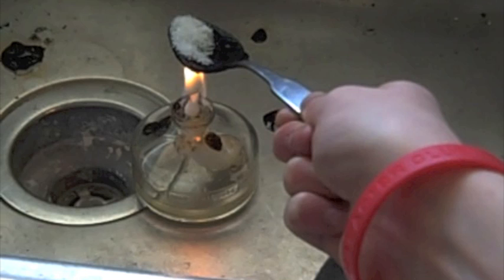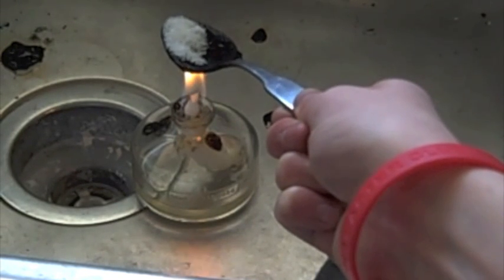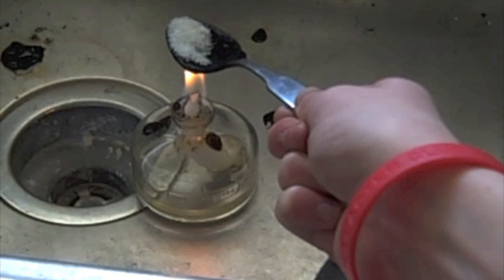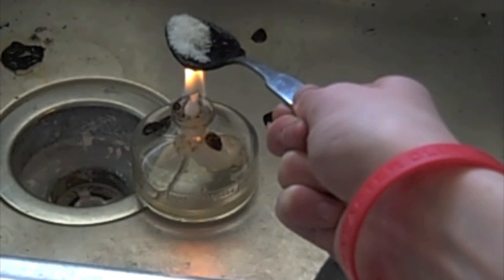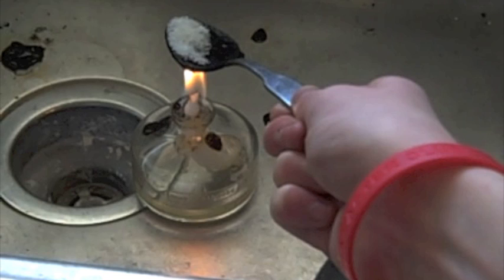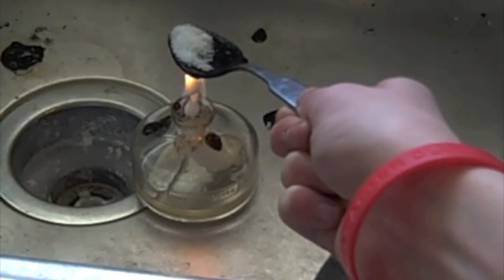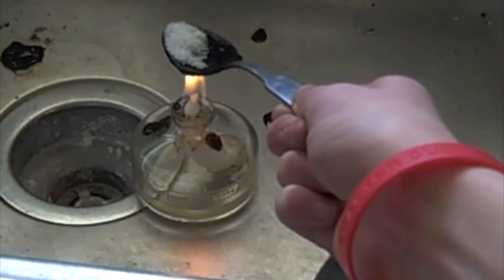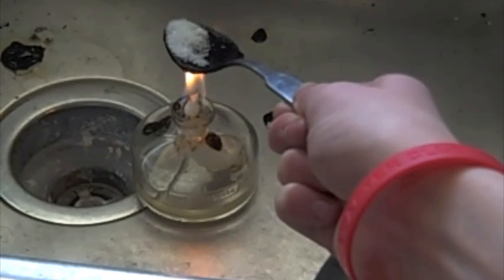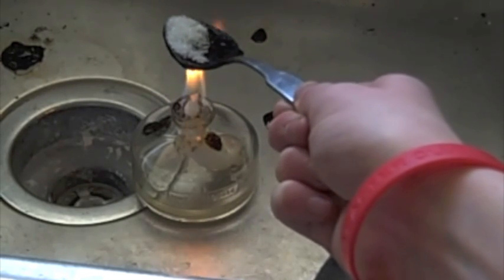Here I have my sucrose on my spoon, and I heat it above my alcohol lamp, or alcohol burner. This process takes a long time. It's easier to use sulfuric acid to dehydrate the sucrose, but I don't have any. So this method will take about three minutes, and I'm going to skip ahead so you can see the product without waiting.